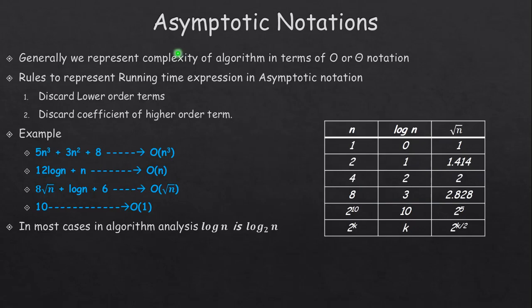The purpose of asymptotic notation is to map f(n), the running time function, to some standard function. Generally we represent the complexity of an algorithm in terms of O or Theta notation; we typically do not use Omega notation. There are two rules for representing a running time expression in asymptotic notation: first, discard lower order terms; second, discard the coefficient of the highest order term. For example, suppose the running time function is 5n³ + 3n² + 8.